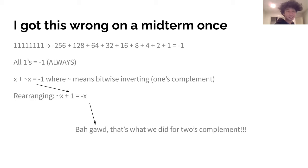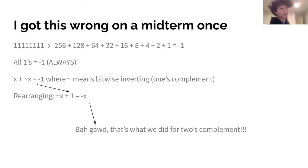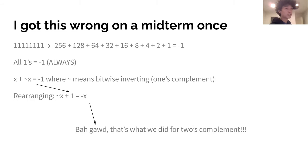One trick regarding two's complement: all ones is always negative one. The way to form negative numbers using this information: x plus the inverse of x equals negative one, because wherever there is a 1 the inverse will be 0, and wherever there is a 0 the inverse will be 1, so adding them together gives negative one. Rearranging, the inverse of x plus 1 equals negative x. You might notice that is basically the process we did for two's complement - we inverted it and then added one to get the negative version of that number.